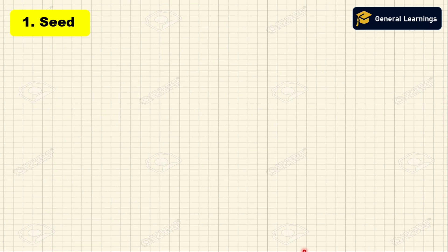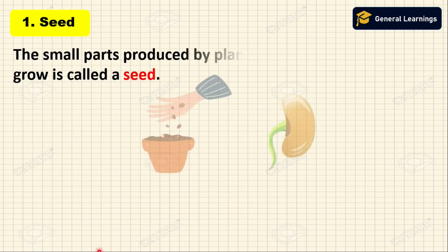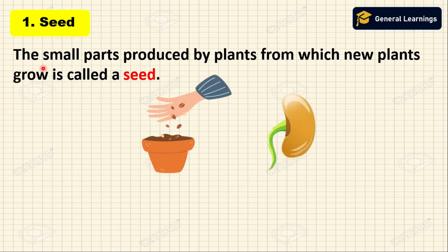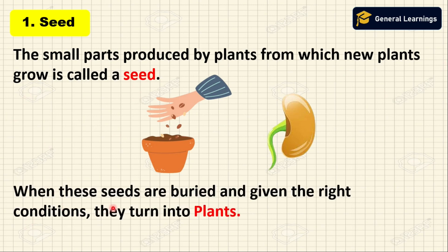First, seed. The life cycle of a plant starts with a seed. The small parts produced by a plant from which new plants grow is called a seed. When these seeds are buried and given the right conditions, they turn into plants.